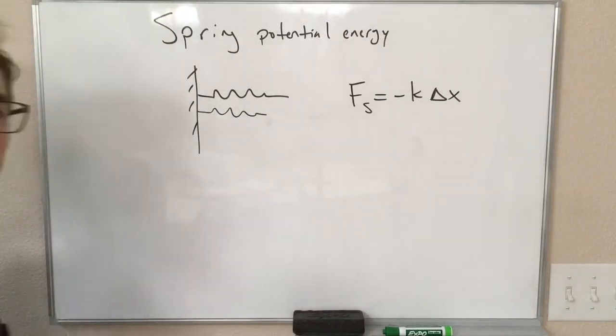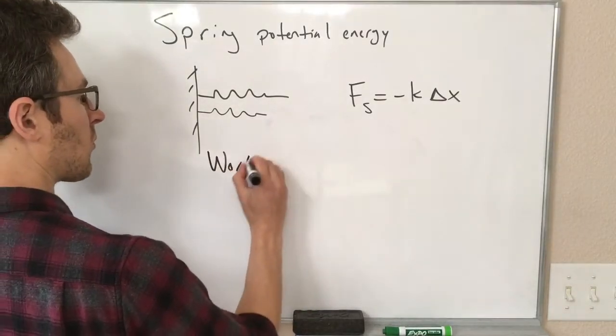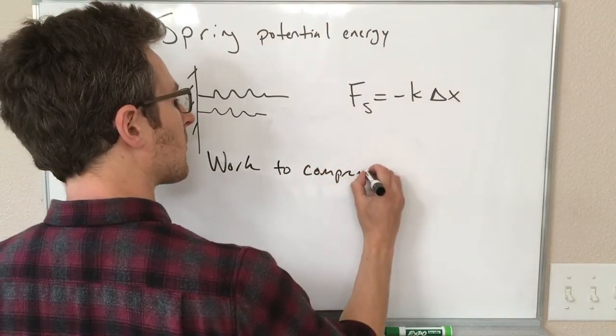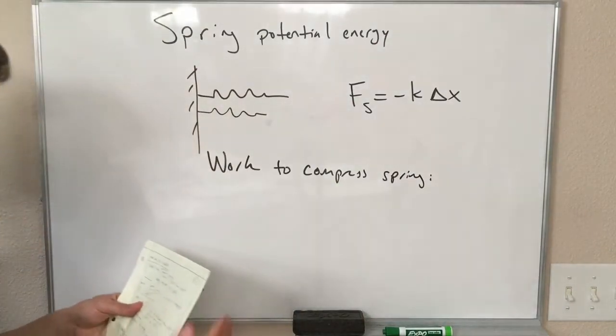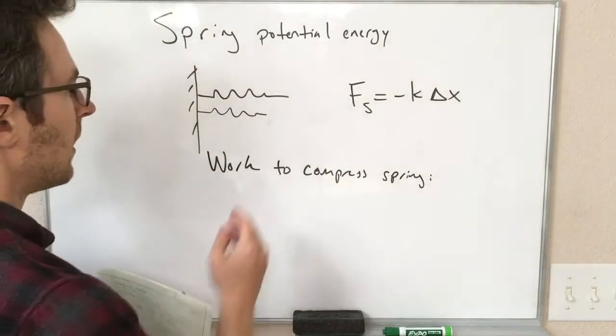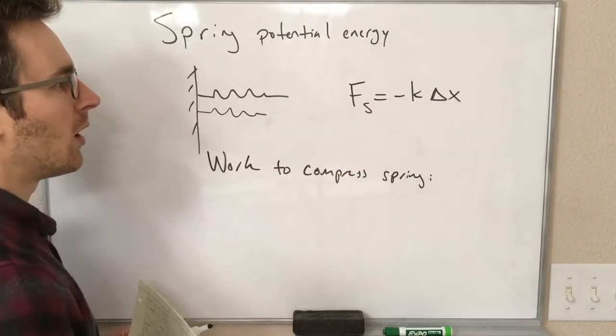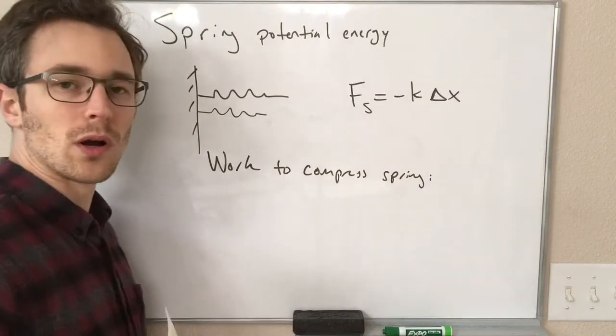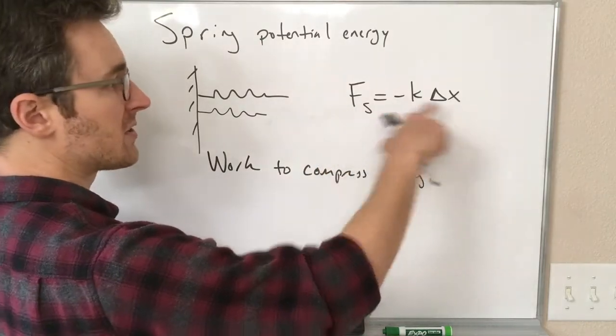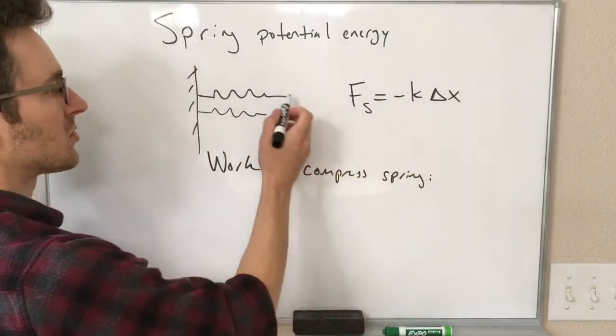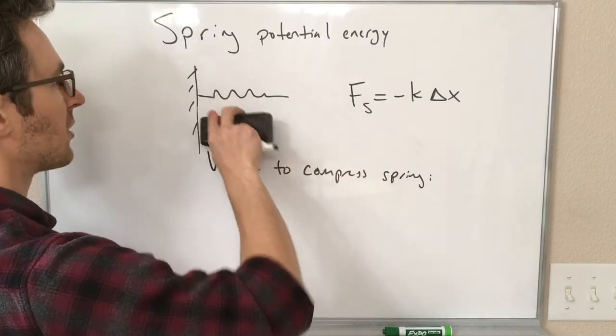So if I push on this spring and make it shorter, we can figure out how much work it takes to compress this spring. If we think about splitting up this compression into a bunch of little pieces, that first little bit of work isn't very big because the force the spring is exerting is really small. This is really close to its equilibrium length, so that first little bit of push isn't very much work.